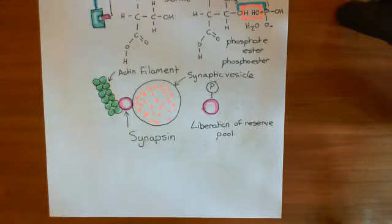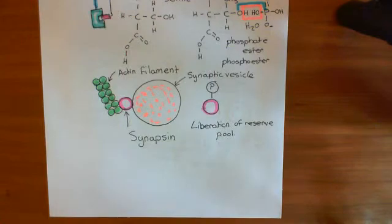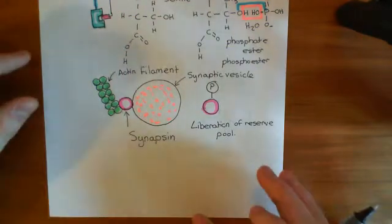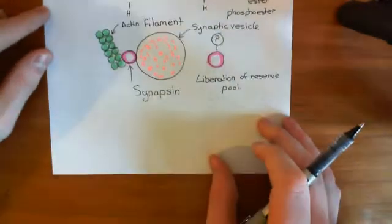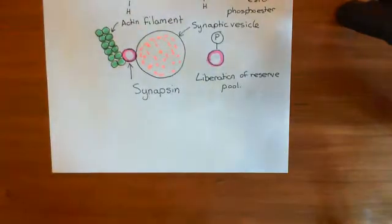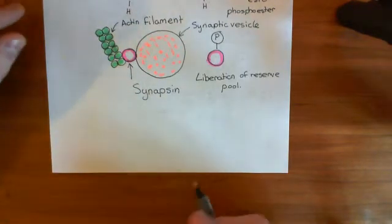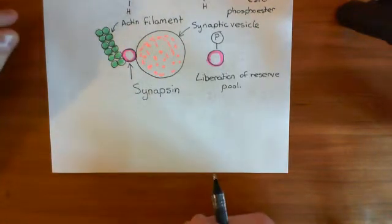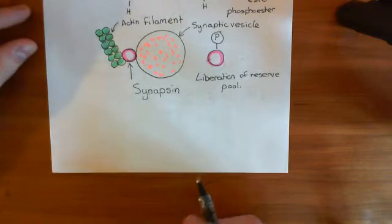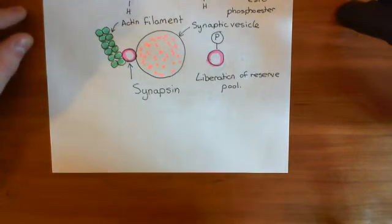Now what we want to do is look at the process of vesicle recycling — basically how you remove the membrane that you have now fused with the plasma membrane from the plasma membrane. This process is not hugely understood but we will go through it as much as we can.